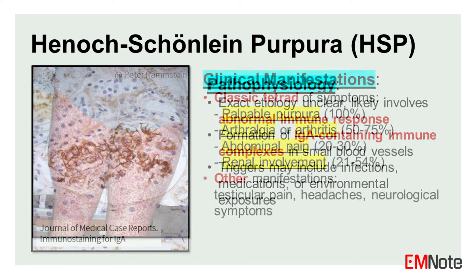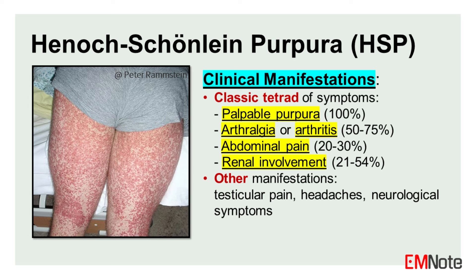Clinical Manifestations. The clinical presentation of HSP is characterized by the classic tetrad of symptoms. First, palpable purpura: non-blanching, raised, and often symmetrically distributed reddish-purple skin lesions, predominantly involving the lower extremities and buttocks, but can also involve the trunk and upper extremities.